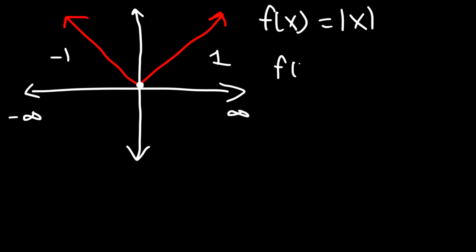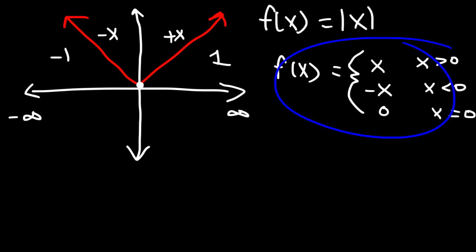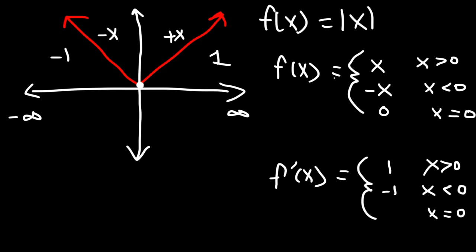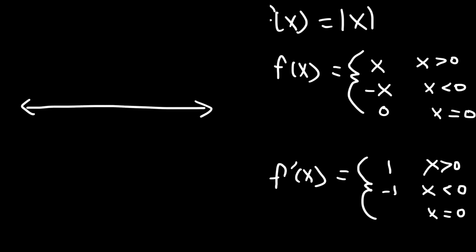We can break the absolute value of x into a piecewise function: it equals x when x is greater than 0, negative x when x is less than 0, and 0 when x equals 0. For f prime of x, the derivative of positive x is 1 and the derivative of negative x is negative 1. So the slope on the right side is 1 and on the left side is negative 1. If we plot f prime of x we get a graph reflecting this.